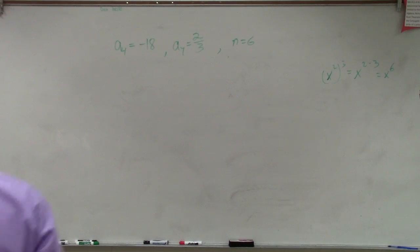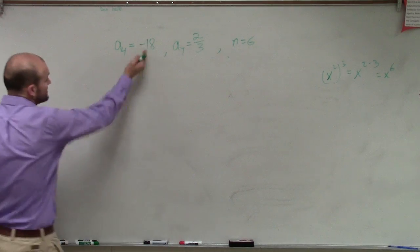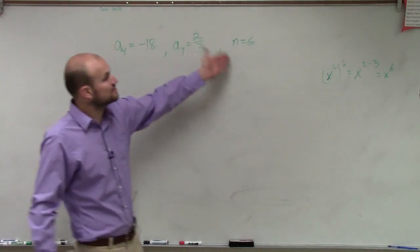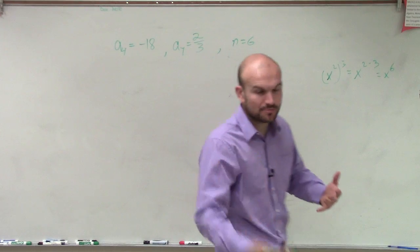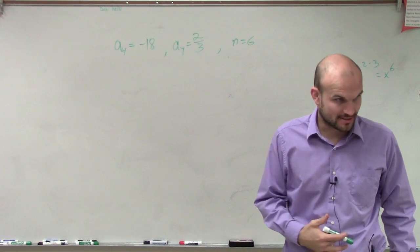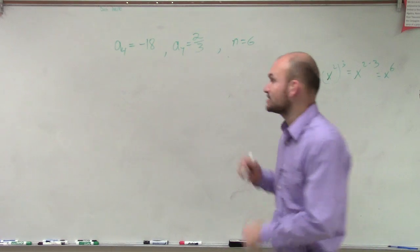Okay, so if we're looking at this, we have a sub 4 equals negative 18, a sub 7 equals 2/3, and n equals 6. Yes, we're trying to evaluate the expression at n equals 6, correct? That is when we're trying to evaluate the expression.